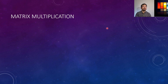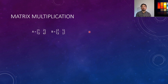Let's assume two different matrices. A is [1, 2; 3, 4] and B is [2, 1; 3, 1]. So I define two different matrices here. The question is: what will be the matrix multiplication A times B?